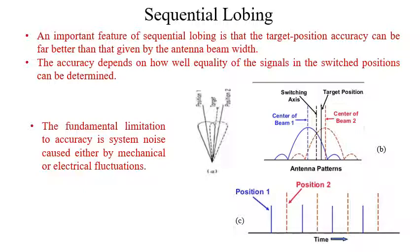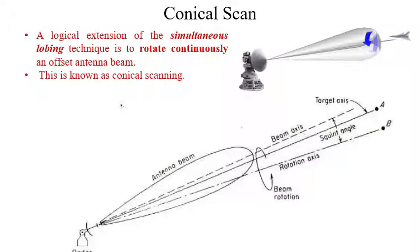The fundamental limitation to accuracy is system noise caused either by mechanical or electrical fluctuations. Now consider the conical scanning, which is a logical extension of the sequential lobing technique — it involves continuously rotating an offset antenna beam. This is what we call conical scanning.